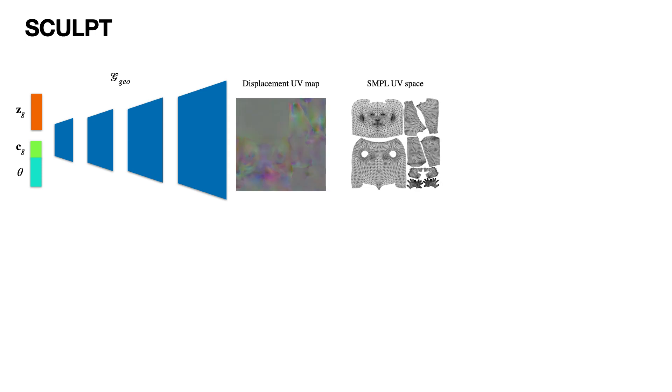SCULPT consists of a geometry generator network that takes a random vector ZG sampled from a normal distribution as input. The clothing type, CG, and the pose, theta, are provided as conditions to the network. The output of the generator is a displacement map in simple UV space.